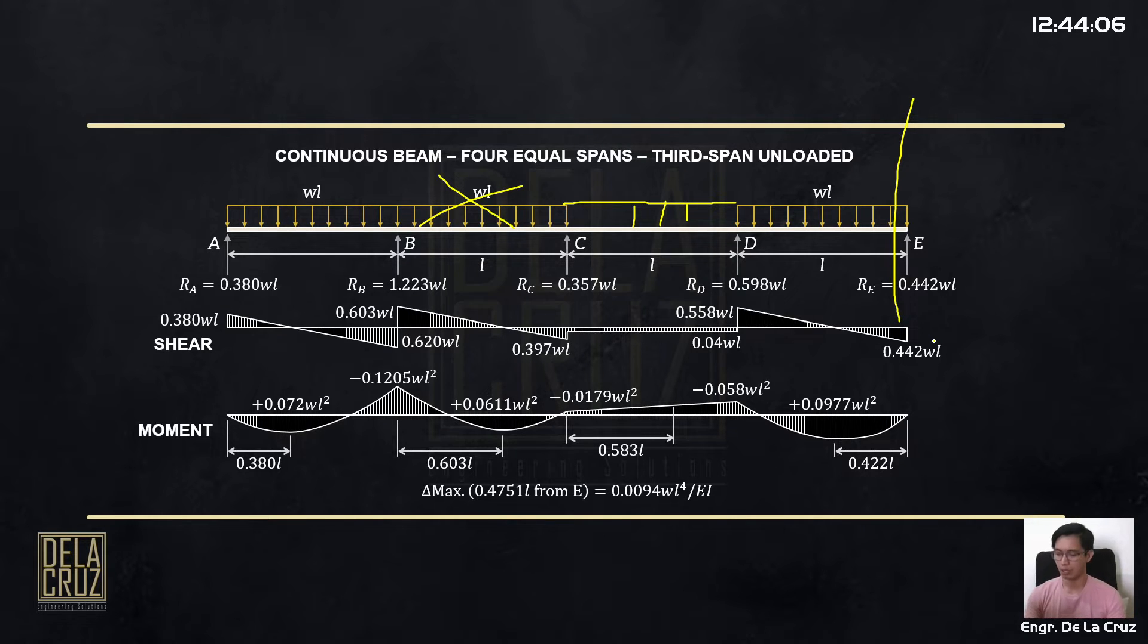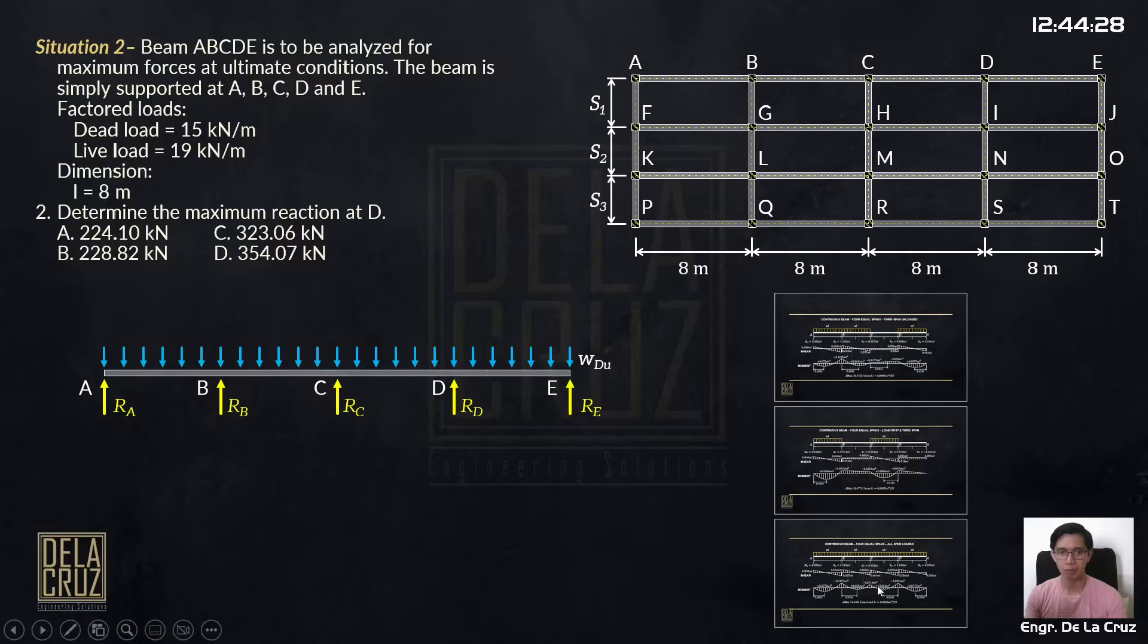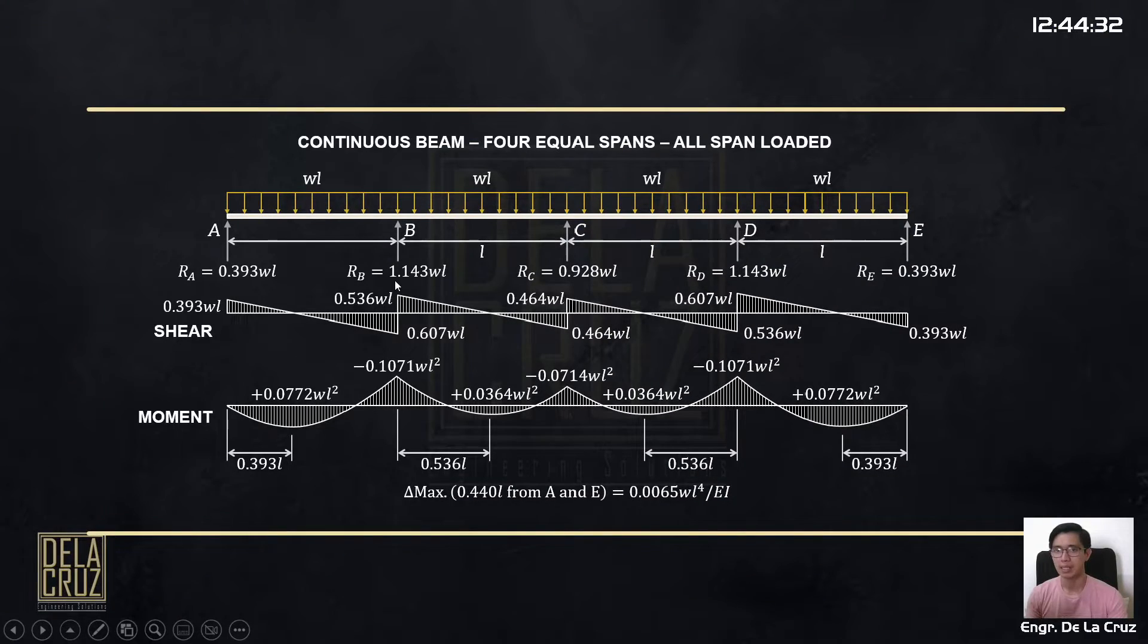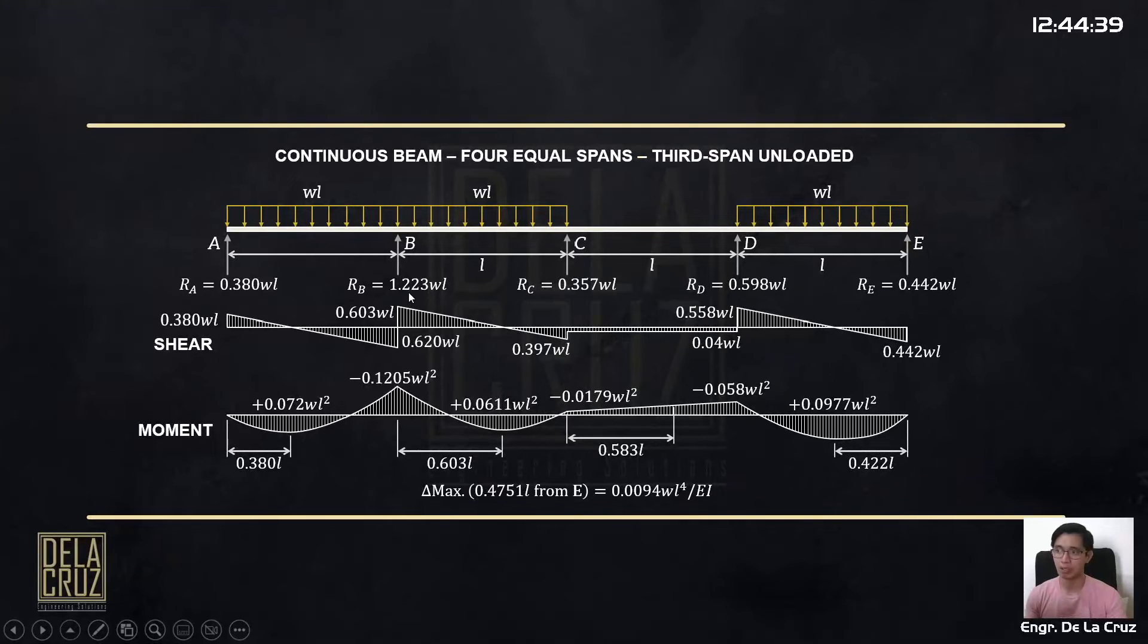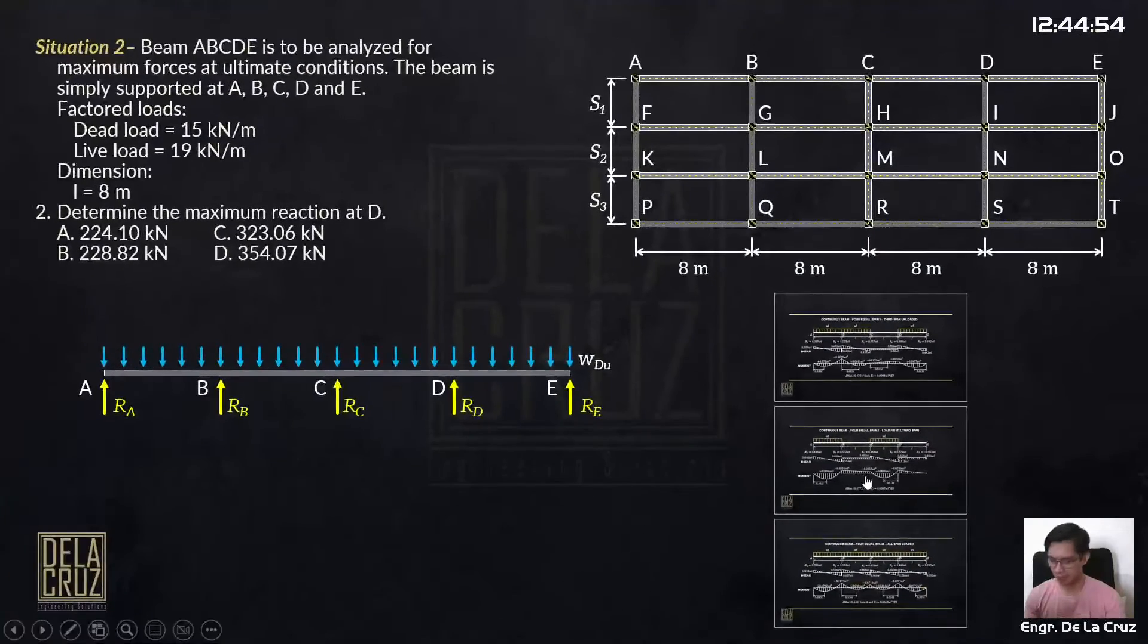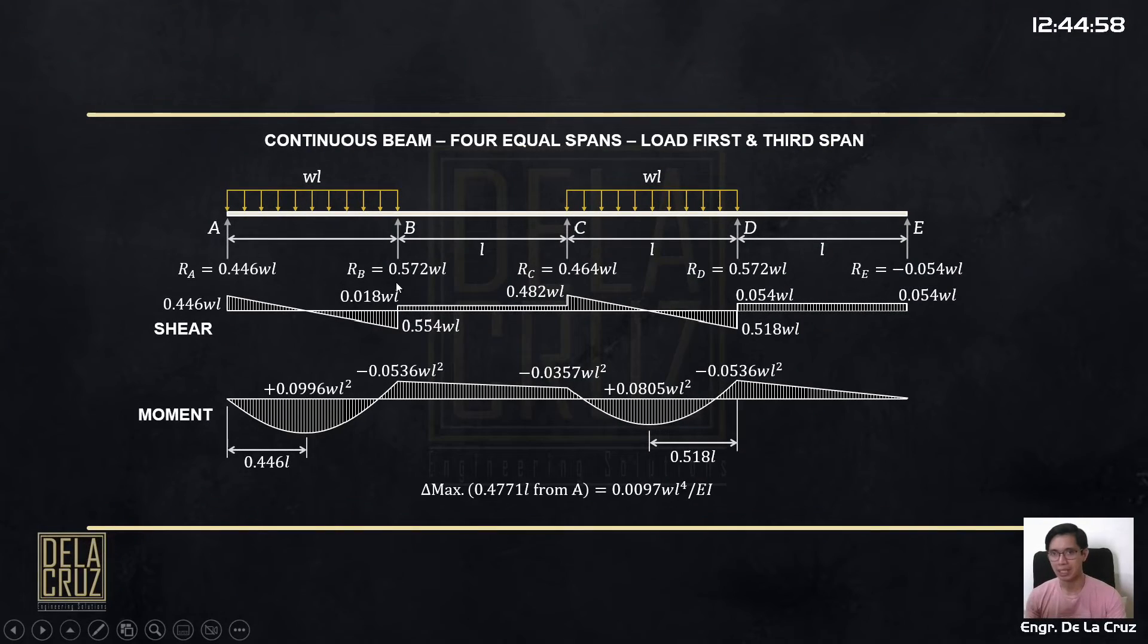For the live load, we need to check again the pattern load. Anong pattern loading yung pwede na magbibigay sa maximum reaction at D. Tingnan natin dito. The reaction at D here is 0.598WL. Tingnan mo lang yung coefficient. Now, kung ibabalik natin dito, yung reaction is 1.143. Obviously, mas malaki yan compared doon, 0.598. But take note, itong pattern load na yan, pwede natin baliktarit. Pwede andito yung load na yan, then wala dito. Ito yung third span measured from this outer support. So yung ibig kong sabihin dito, pag titignan natin yung isang value, always check the other as symmetrical portion which is dito at B. Symmetrical yan kasi pwede naman natin baliktarit si B.